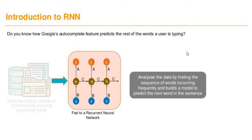That is how the autocomplete feature predicts the next word. This particular collection of large volumes of data is fed to the recurrent neural network, which analyzes the data by finding the sequence of words — which words are occurring frequently sequentially — and it tries to build a model. This model is nothing but the set of algorithms working in the background on the Google search engine to predict the next word in the sentence.